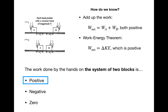We can also use the work-energy theorem, which states that the total work is equal to the change in total energy of the system. Here the only type of energy is kinetic energy. If we push on blocks with a constant force, we accelerate them — we take them from zero kinetic energy and give them some kinetic energy. So the blocks start at rest and end with some positive kinetic energy, which means there must be some positive work done because the change in kinetic energy is positive.